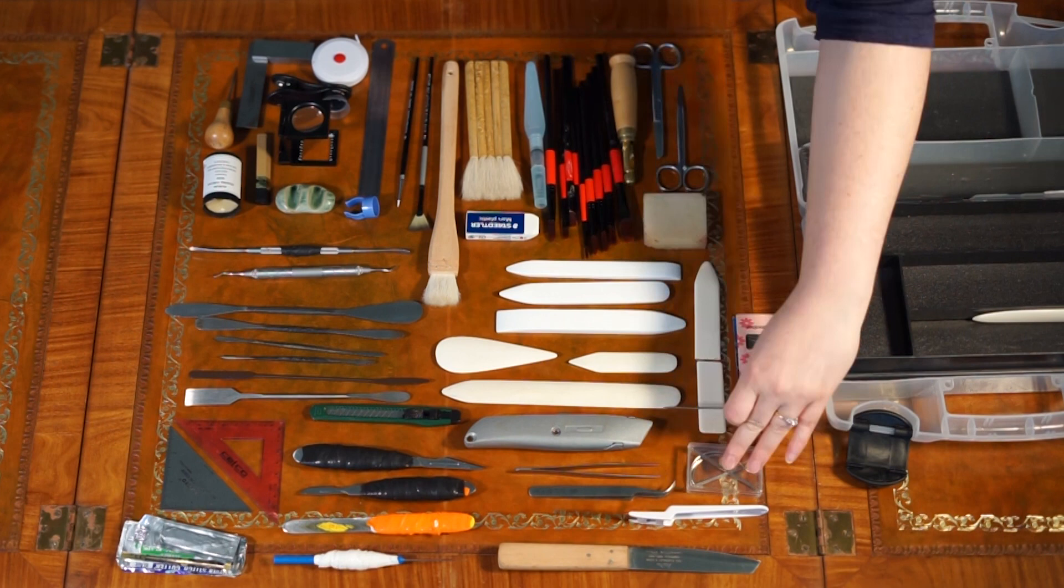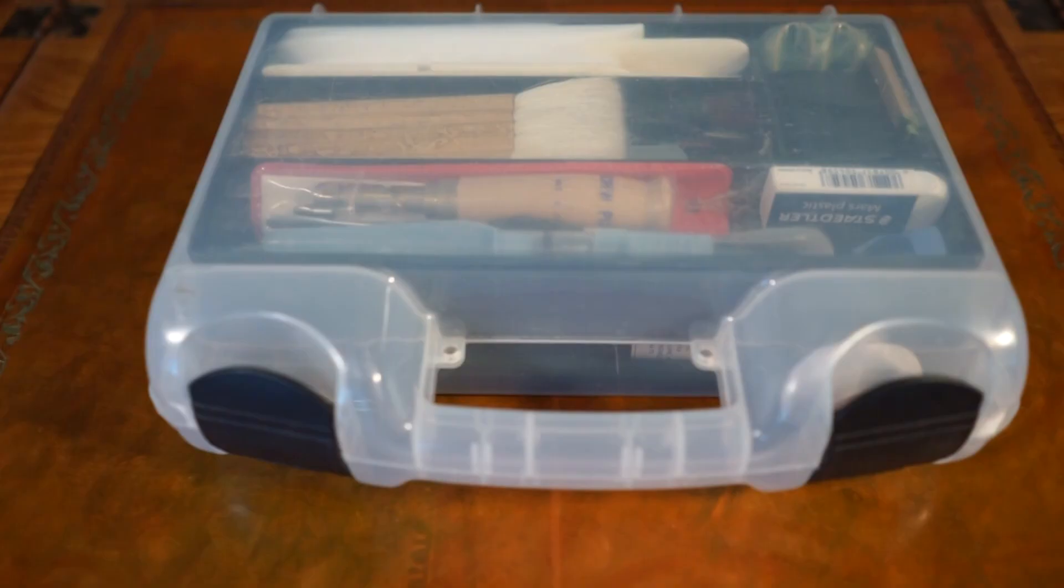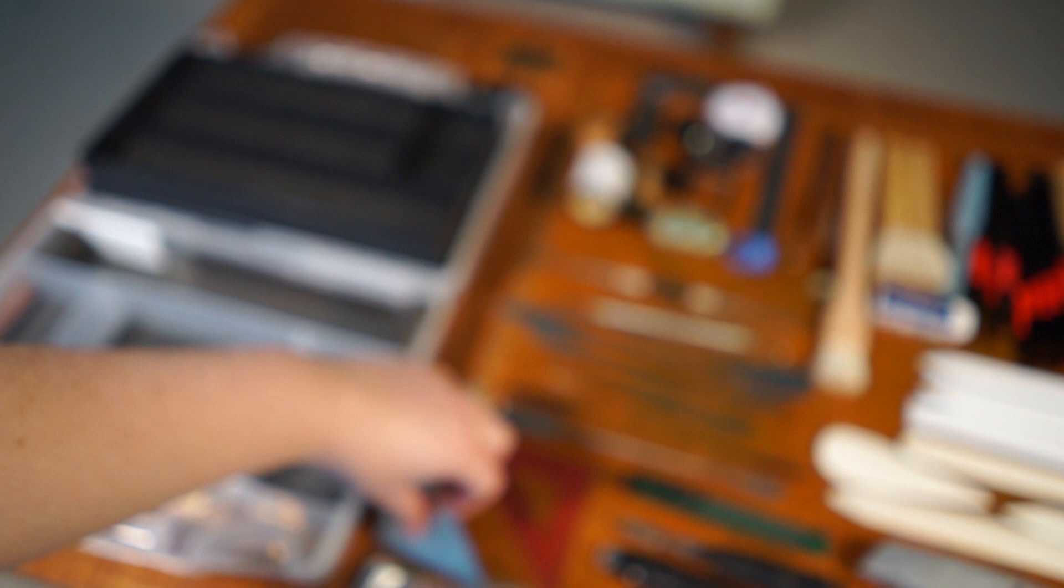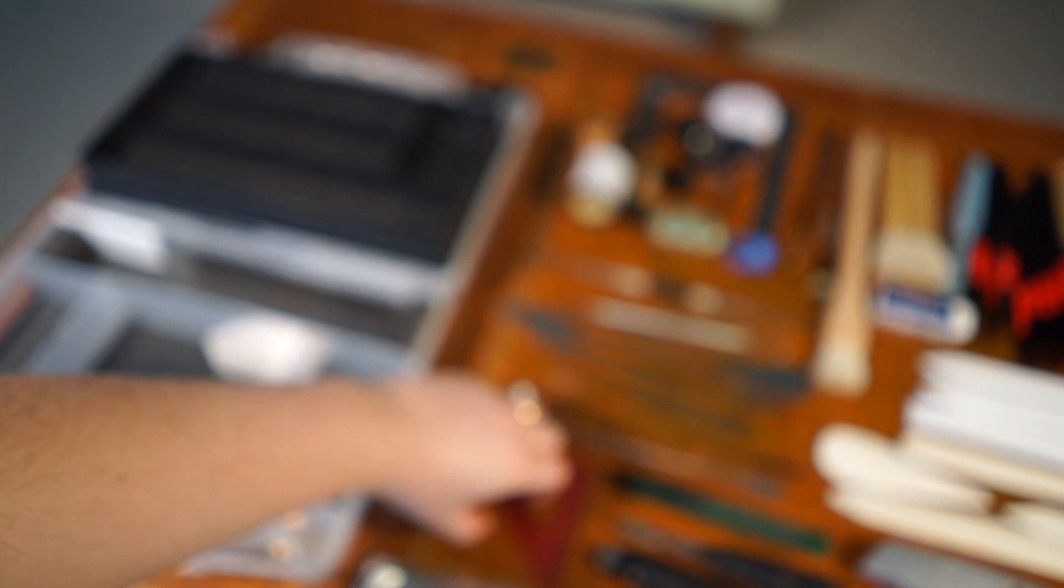So here is my traveling conservation toolkit all laid out. I find it pretty impressive that I've managed to fit this many tools in such a small and compact traveling case. This is my exacto triangle. It's in inches unfortunately. I'm in Australia so I use the metric system, but it is very precise and it's great to cut along. I also have a plastic one but it is in centimeters which is quite useful.